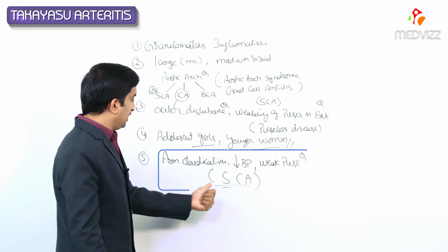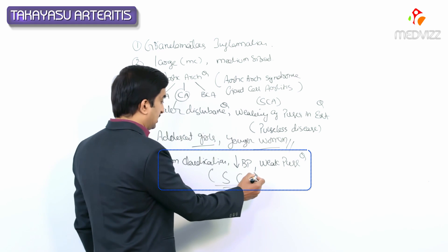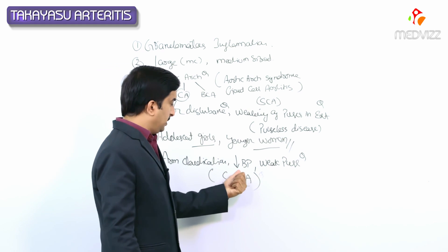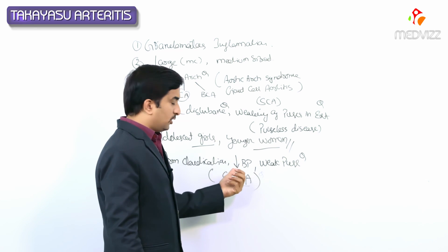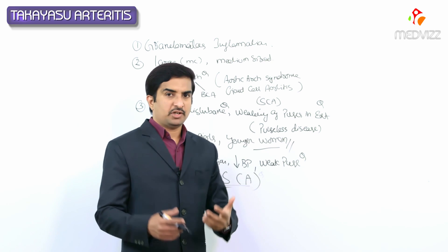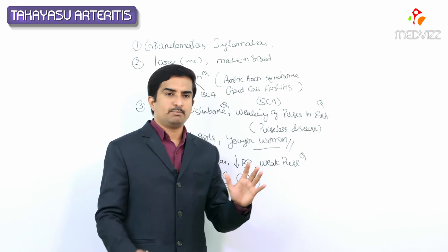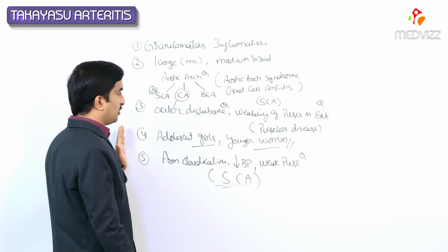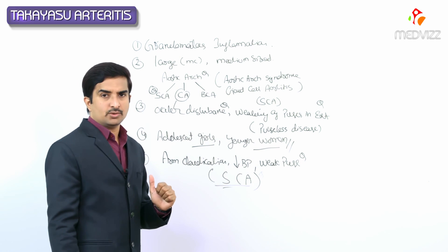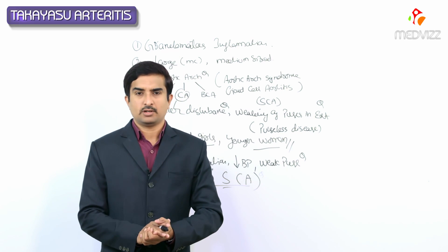Key MCQ points: because of subclavian artery involvement — the most common artery in Takayasu — we see arm claudication, lowering of brachial artery pressure, weakening of the pulse, and a pressure difference greater than 10 mmHg between arms. These are the important points to remember for the exam regarding Takayasu arteritis.